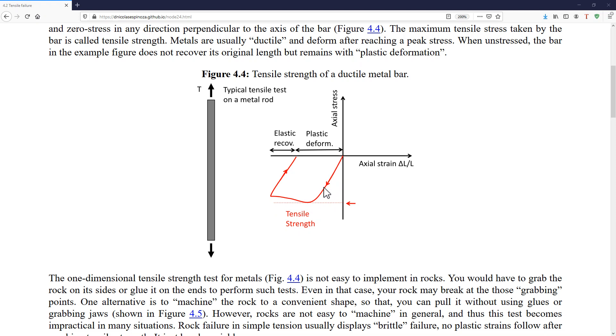Before we reach the maximum value, we often see a range of elastic deformation, and after that, when it reaches the peak, irrecoverable deformations start to occur. If we were to continue loading this metallic rod in tension, we will see all irrecoverable deformation. If eventually we unload this rod, then we will have some elastic recovery, but most of the deformation is not going to be recovered. That's what is called plastic deformation.